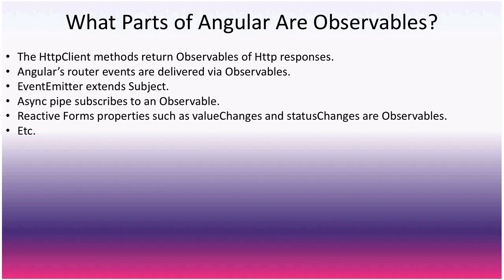In Angular, the HTTP client methods return observables of HTTP responses — unlike fetch which returns promises — allowing you to use the pipe operator and chain operators. Angular's router events are delivered via observables, EventEmitter literally extends Subject, the async pipe subscribes to an observable or promise in templates, and reactive forms' value changes and status changes are also observables.